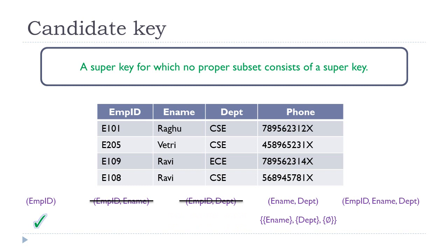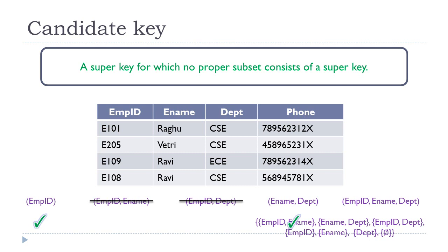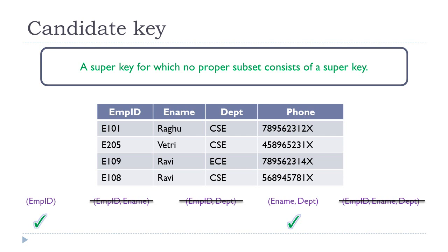For employee name and department, the proper subsets are employee name alone, department alone, and the null set — none of which is a super key on its own. Hence, employee name and department is a valid candidate key. For the set of all three attributes, the proper subsets include employee ID and employee name + department, both of which are super keys — so that combination is not a candidate key. We conclude that there are only two candidate keys out of the five super keys we identified.